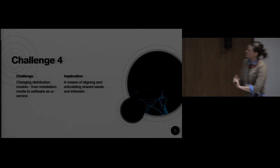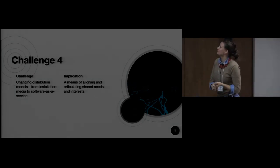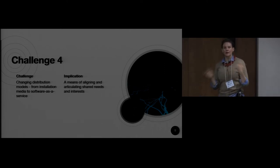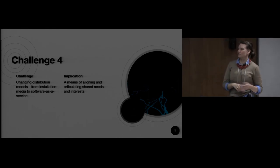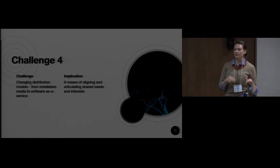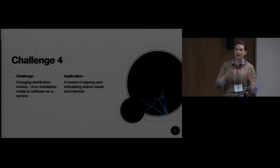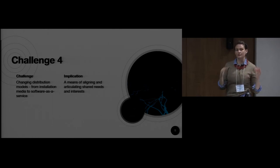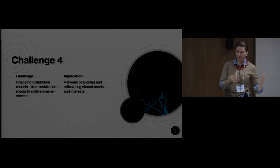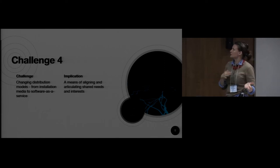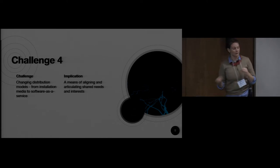A fourth challenge is a changing distribution model, from installation media to software as a service. Going back to the Association of Internet Researchers, the relationship between platformization and how content is being provided — or not — is constantly shifting. Even defining what a platform is becomes a problem for researchers of platforms. The implication is that aligning and articulating shared needs and interests becomes a really important part of this.